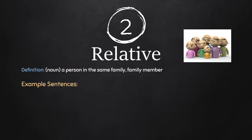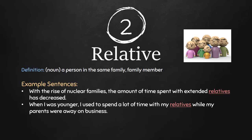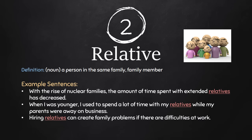Next is relative. A relative is a person in the same family, or a family member. With the rise of nuclear families, the amount of time spent with extended relatives has decreased. Nuclear families are like the parents and children, while extended relatives include aunts, uncles, cousins, and maybe grandparents. When I was younger, I used to spend a lot of time with my relatives while my parents were away on business. And: hiring relatives can create family problems if there are difficulties at work.